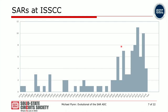Looking at ISSCC over the years, this next figure shows the distribution of SAR ADC papers at the conference. Back in 1975, this is that SAR paper from McCreary that got everything going. But in fact there was a paper just a year before that from Suarez, which described another SAR ADC from Berkeley — a two-capacitor SAR ADC — and that didn't really take off. If you look at this plot, you can see there's been a number of SAR ADC papers over the years, and those papers started to grow exponentially in number sometime in the 2000s.